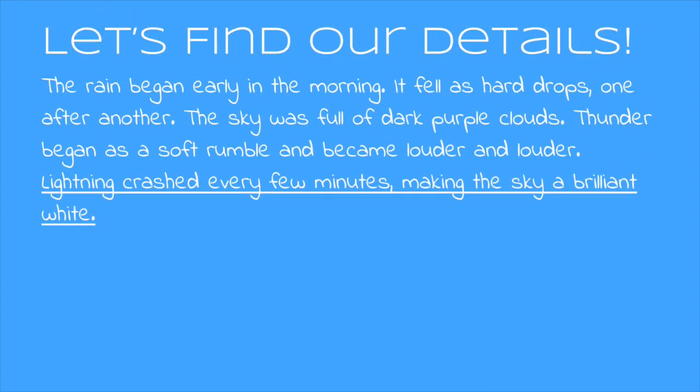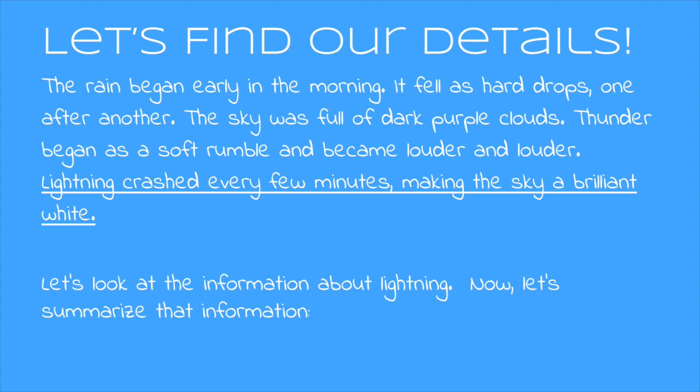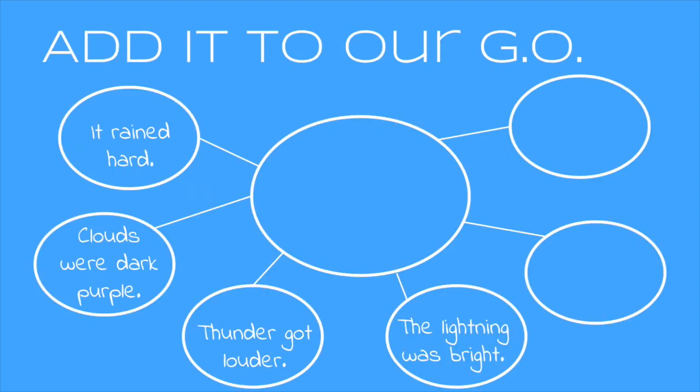And now we can take a look at our last detail, the information about lightning. Lightning crashed every few minutes, making the sky a brilliant white. And now we need to summarize it. How about, the lightning was bright, and now we can add it to our graphic organizer.